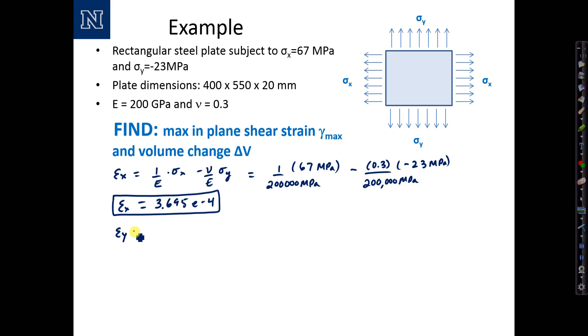Epsilon y, just a slight change to the formula: negative nu over e times sigma x plus 1 over e times sigma y, which would be negative 0.3 over 200,000 megapascals times 67 megapascals plus 1 over 200,000 megapascals times negative 23 megapascals. This computes to negative 2.155 times 10 to the negative 4 and it's unitless and negative because both of the terms were negative.